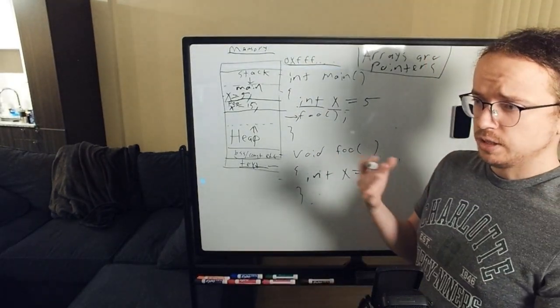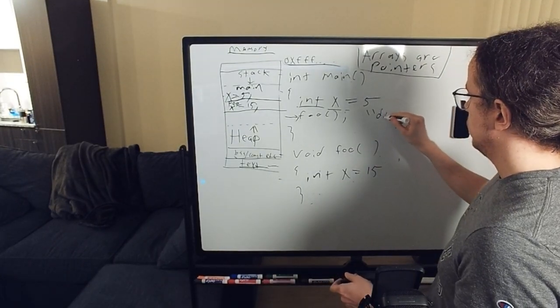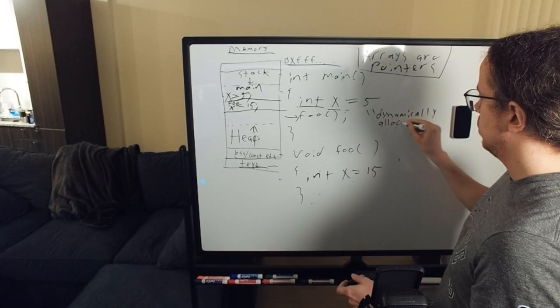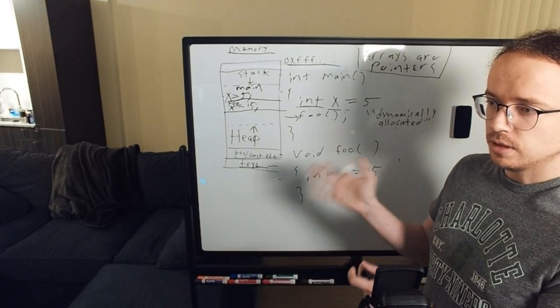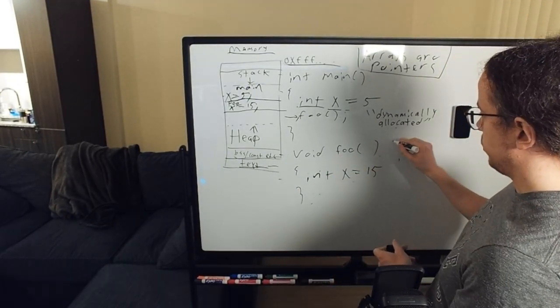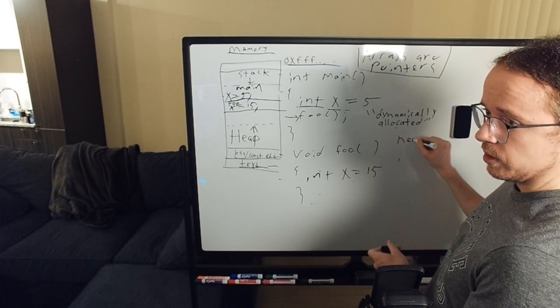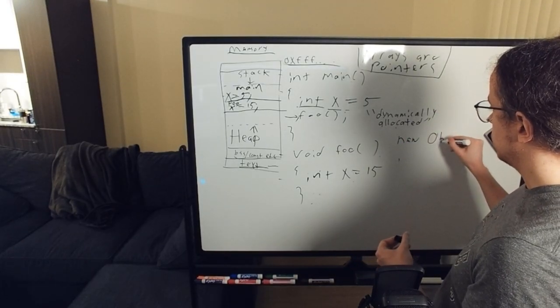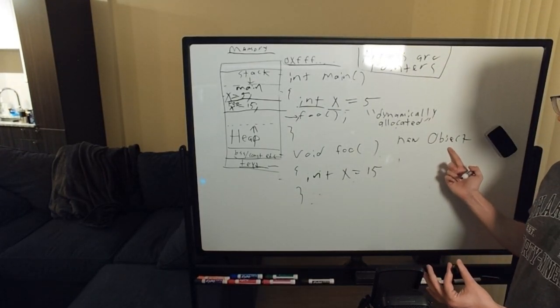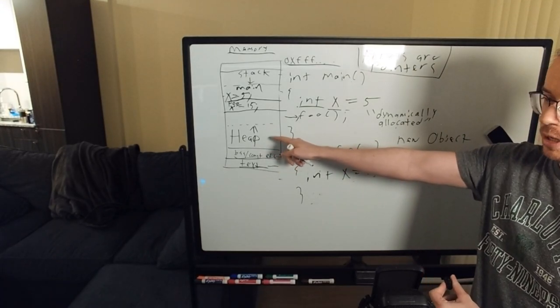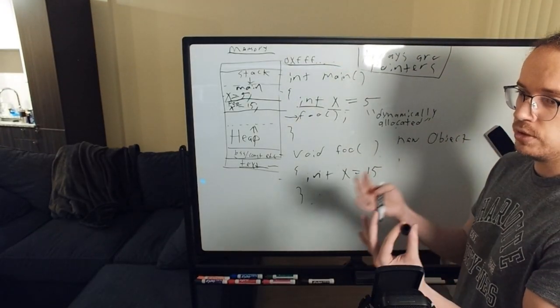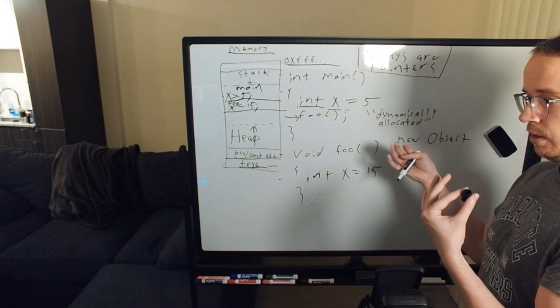There are other types of memory, what we call dynamically allocated memory that you also use. So you've done this before. If you're used to doing Java, you've probably said new object, right? New object. This allocates memory on the heap. The heap is for dynamic allocation. And the reason we call it dynamic allocation is we don't necessarily know how much memory we needed at the beginning.